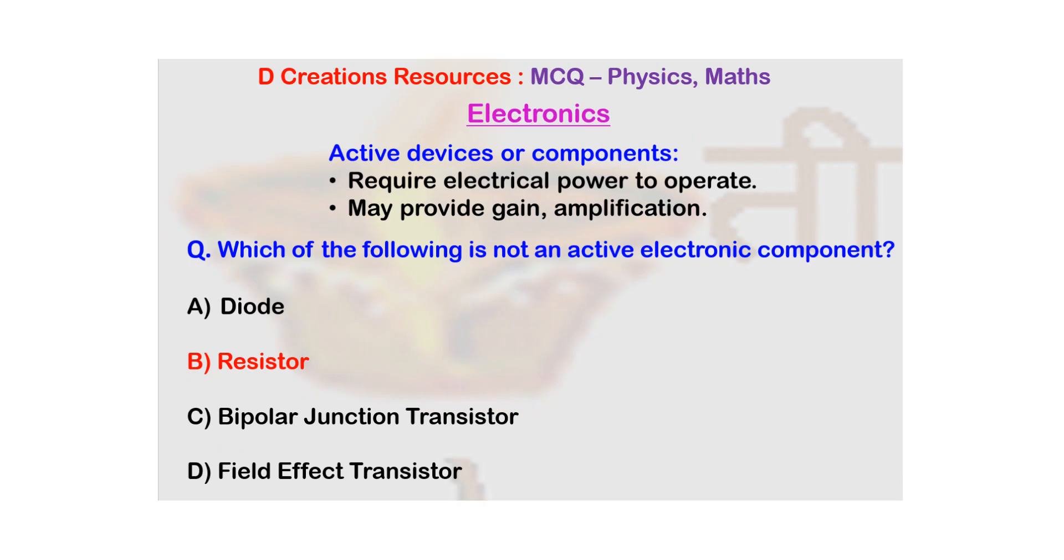An active device or an electronic component is basically that component which requires electrical power to operate. And it can provide amplification, so basically the gain is more than one.